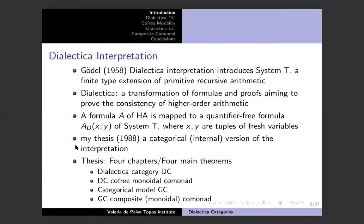The dialectica consists of two parts: system T of finite type functions, and the dialectica interpretation transformation itself. The bit about system T became very famous — it's in Girard's Proofs and Types book. But the dialectica transformation itself is much less well known. What it does is try to get rid of the alternation of quantifiers in higher-order arithmetic by transforming all formulas into formulas of the specific shape 'there exists something for all something,' written A_D(x, y).